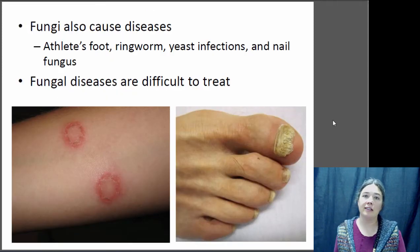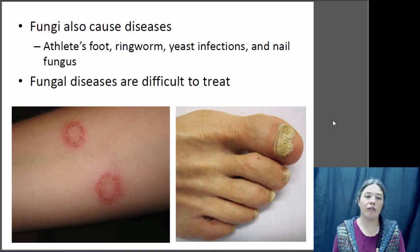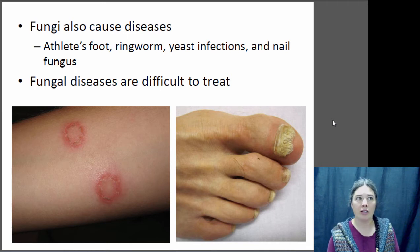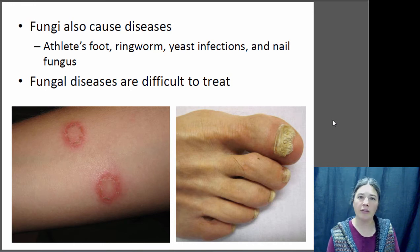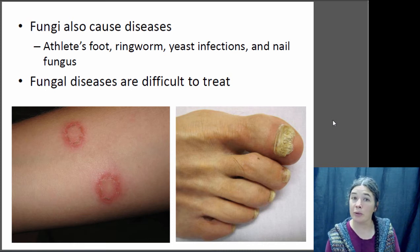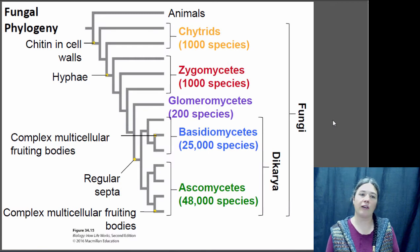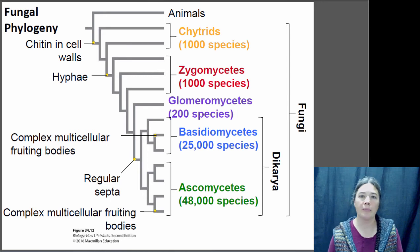There are also disease-causing fungi — athlete's foot, ringworm, yeast infections, nail fungus. These diseases can be very difficult to treat. If you look at a phylogenetic tree, our sister group as animals is actually the fungus, so things that kill fungus usually kill animals too. It's hard to find treatments that effectively kill the fungus without being toxic to humans, which is why they're very difficult to treat.